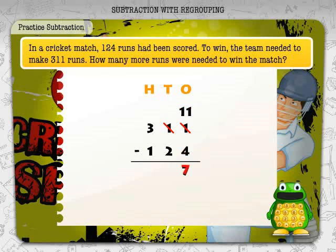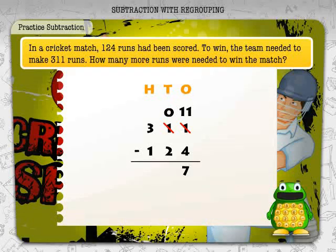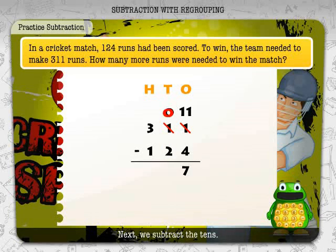As one ten has been borrowed, let's strike the one in the tens place and write zero above it. Next we subtract the tens. From zero tens we need to take away two tens, but we have no tens.